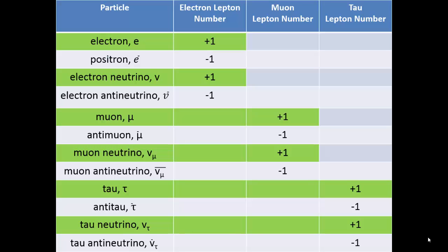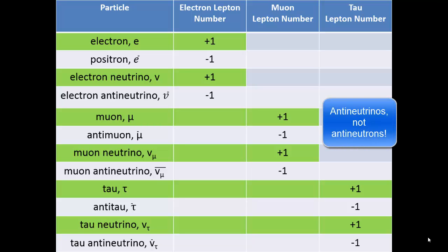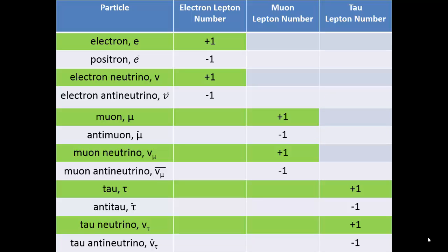Leptons, which include electrons, muons, and taus, and their corresponding neutrinos, get a value of positive one. Antileptons, which include positrons, antimuons, and antitaus, and their corresponding antineutrinos, get a value of negative one. All other particles get a value of zero.